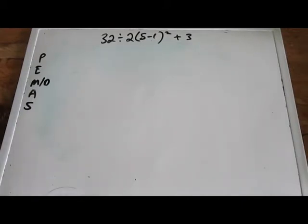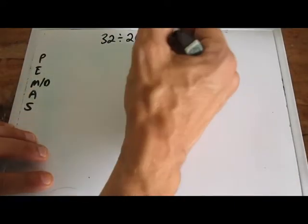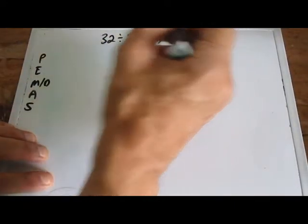Okay, this video is for everyone in Math 50C and Math 50D, all the students that I coach in those classes at El Camino College, and anyone else out there in YouTube land that wants to understand the order of operations. So we're going to take a look at this problem here, 32 divided by 2 times 5 minus 1 squared plus 3.